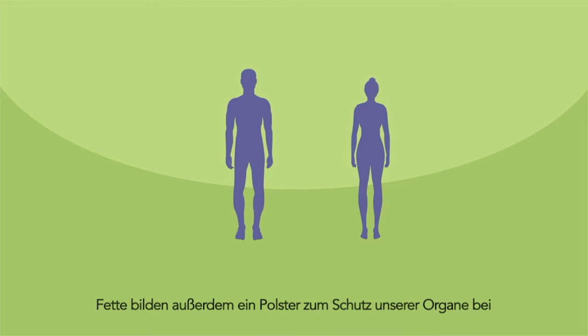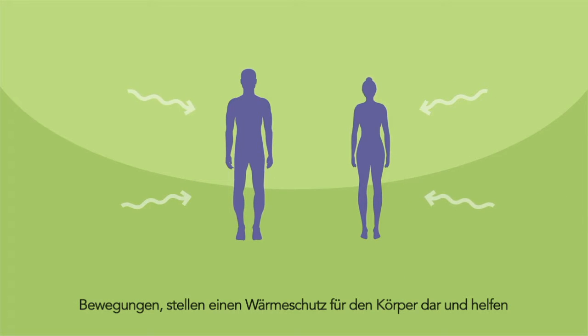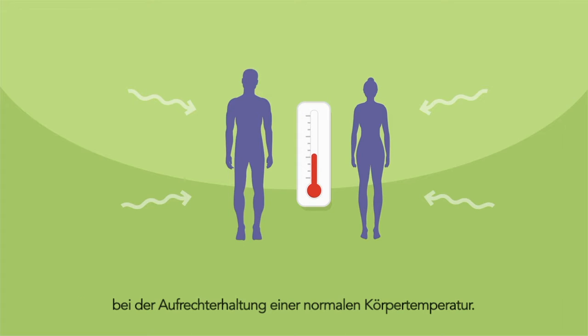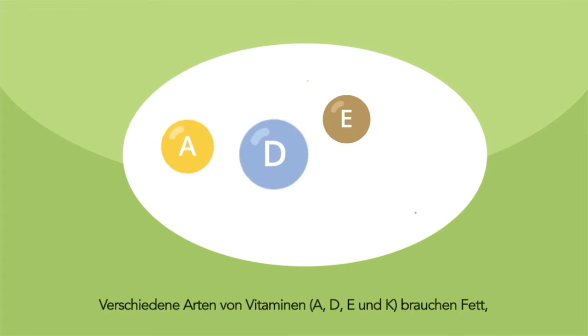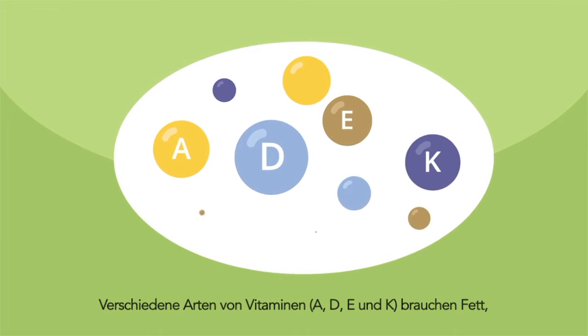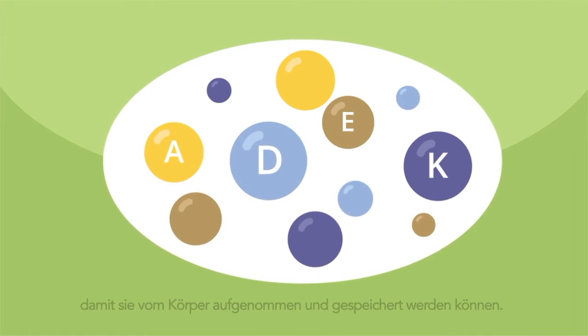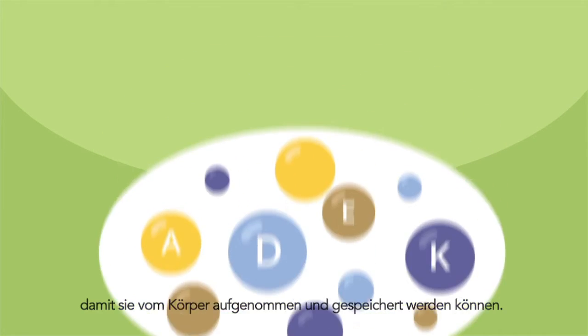Fat also cushions our organs during movement, insulates the body and helps maintain a normal body temperature. Some types of vitamins — A, D, E and K — rely on fat for absorption and storage.